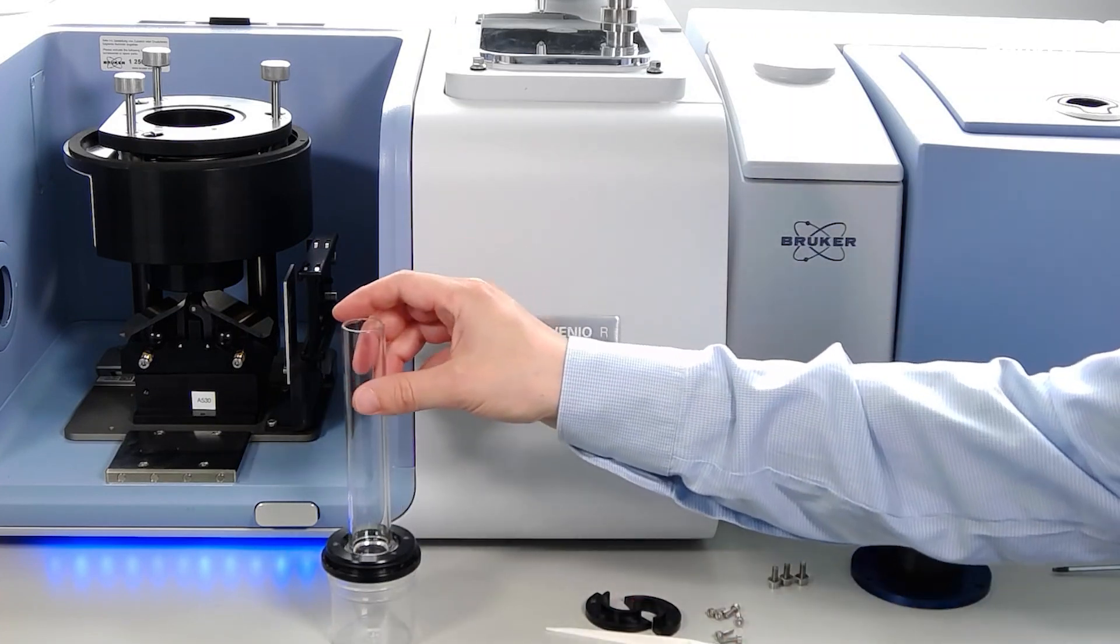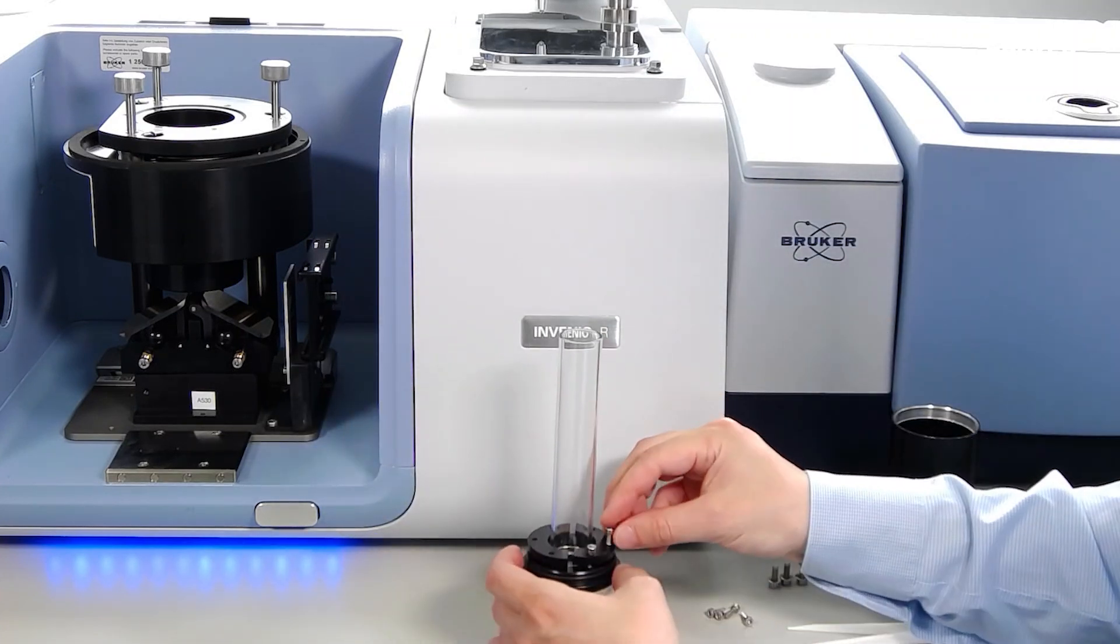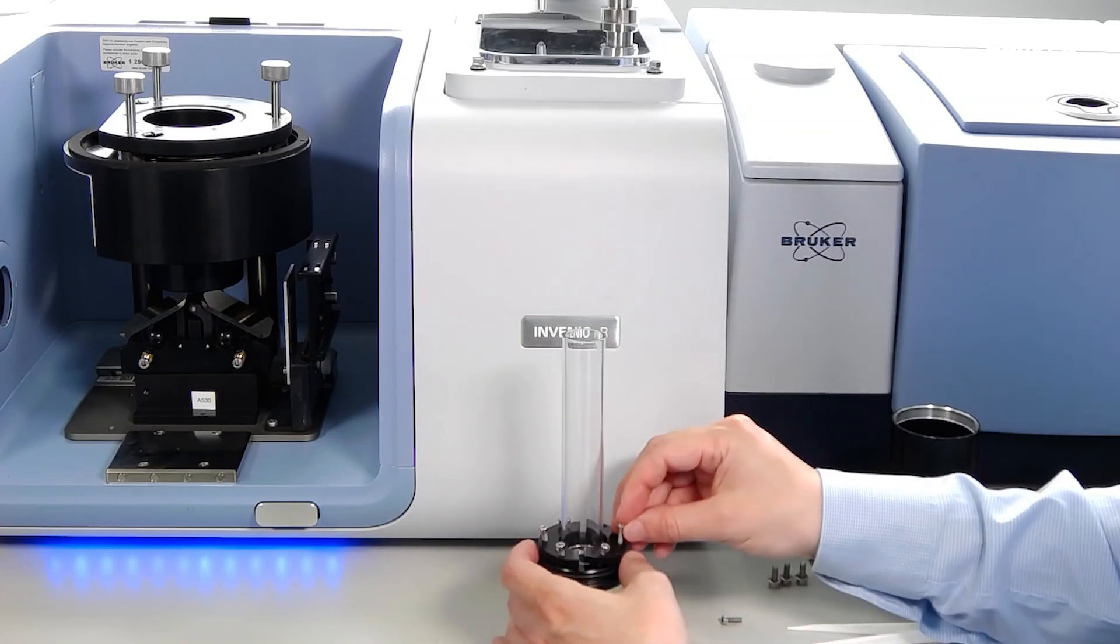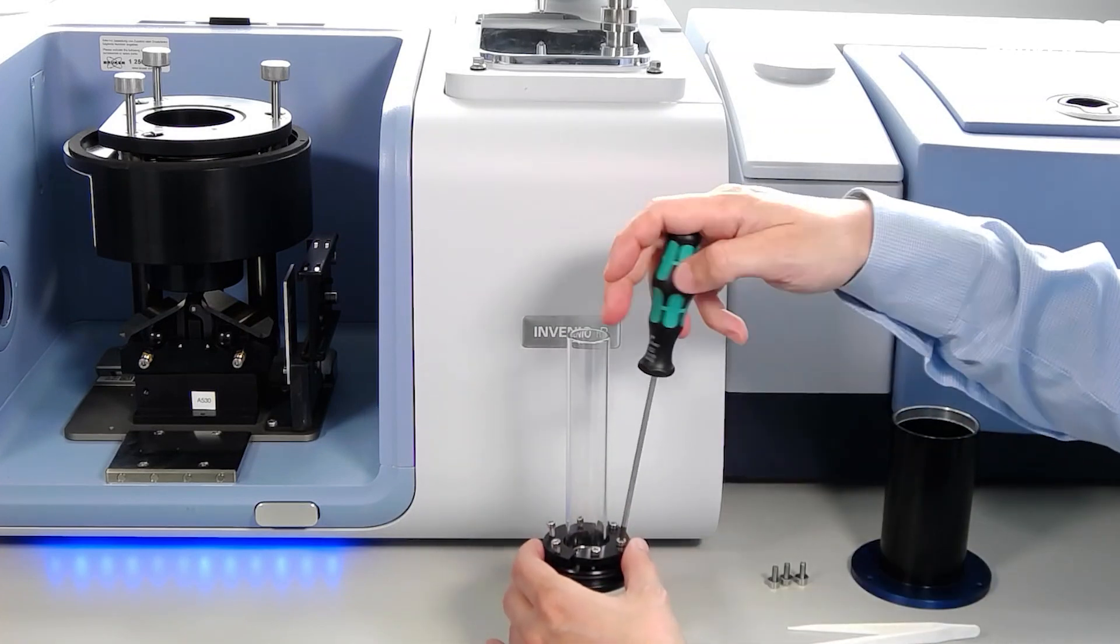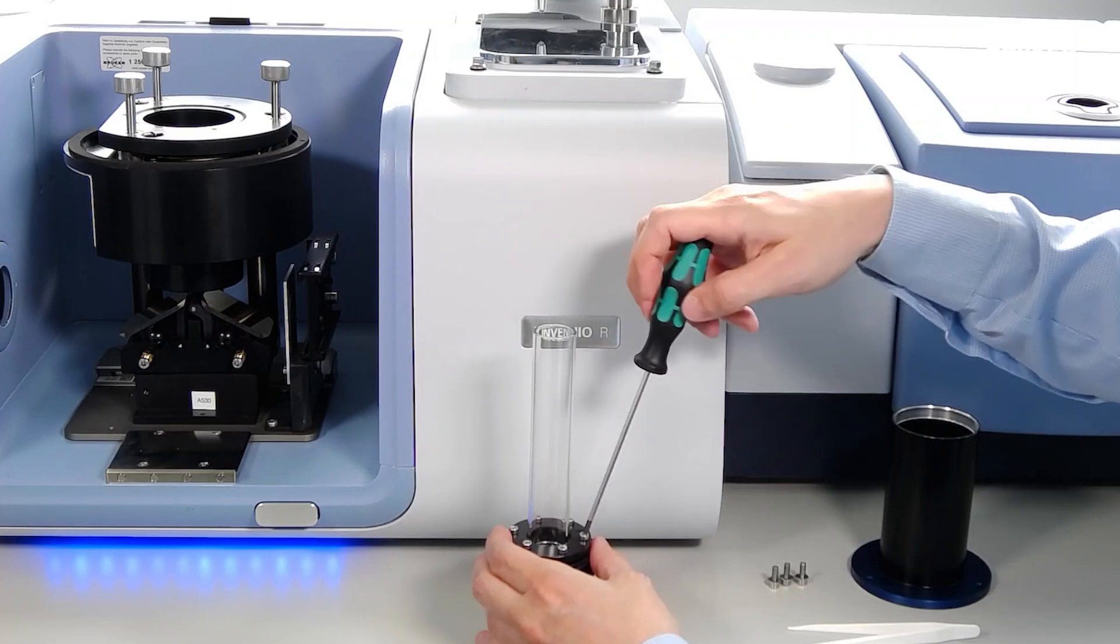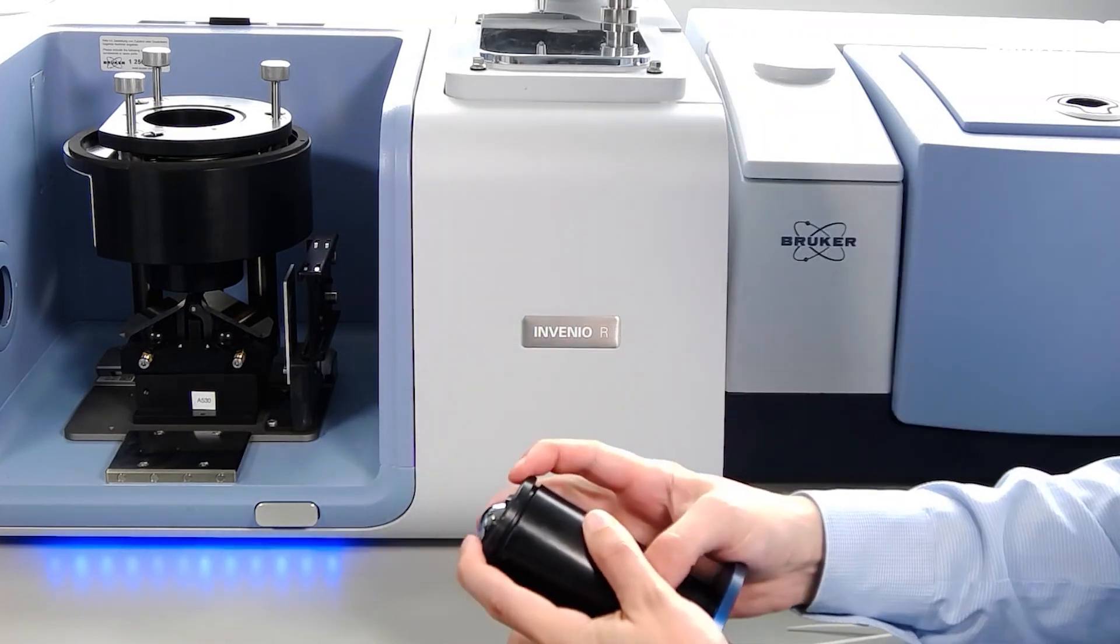First, assemble the glass tube with the ATR crystal plate. Remember to tighten each screw in an alternating manner and only hand tight. Then, insert the combined glass tube and ATR crystal into the aluminum body.